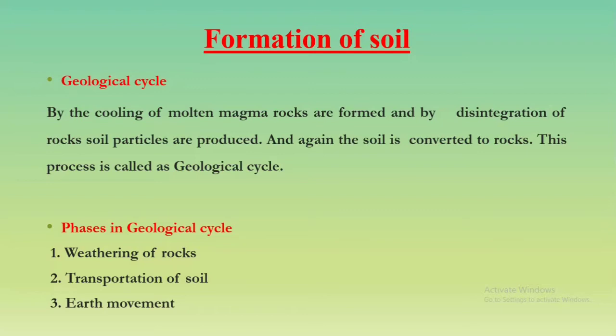The formation of soil involves the geological cycle. When hot molten magma cools down, rocks are formed. Due to the disintegration of these rocks, soil particles are produced, and by natural processes this soil is converted back to rocks. This cycle is called the geological cycle — rocks are converted to soil and soil is converted back to rocks.